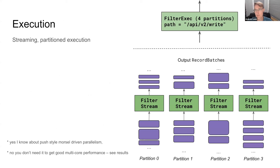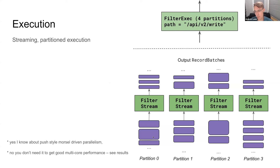Let me give you a flavor of the execution model. You start with a physical operator — for example FilterExec — with four partitions applying some predicate. Because there are four partitions you end up with four distinct copies of the operation happening at once at runtime across four different cores. These record batches go in and come out, with each partition processing inputs entirely independently and producing outputs entirely independently.